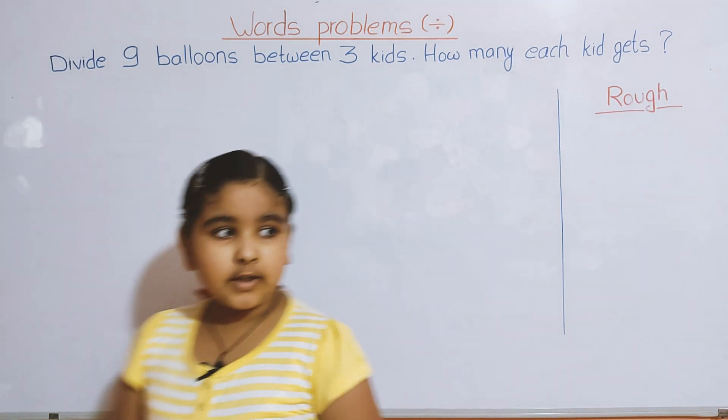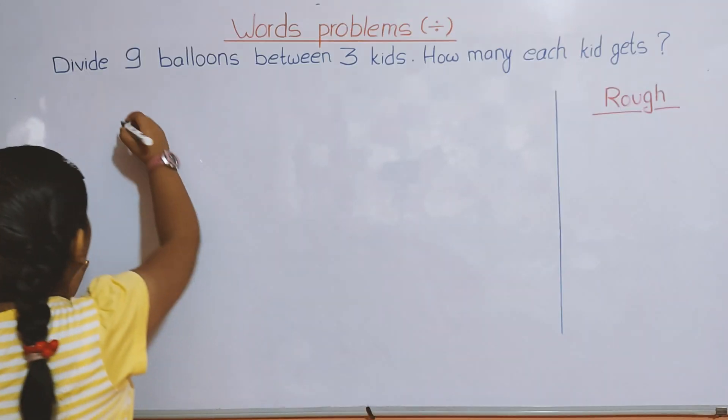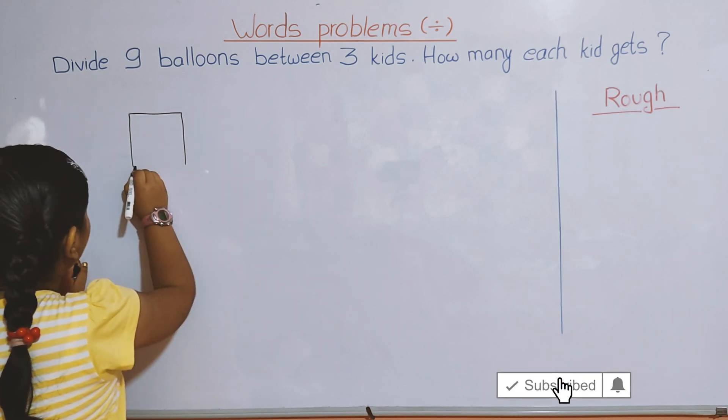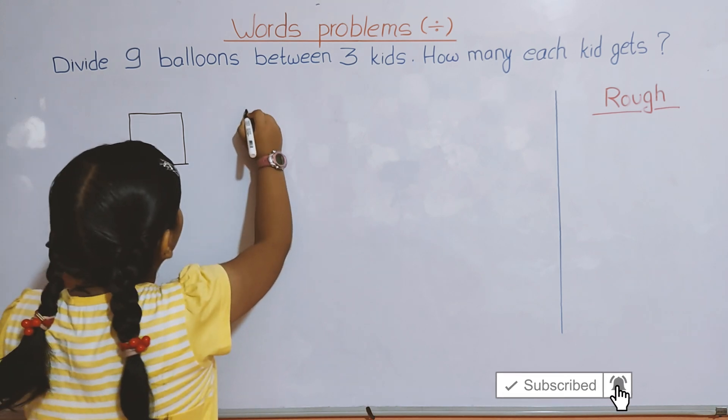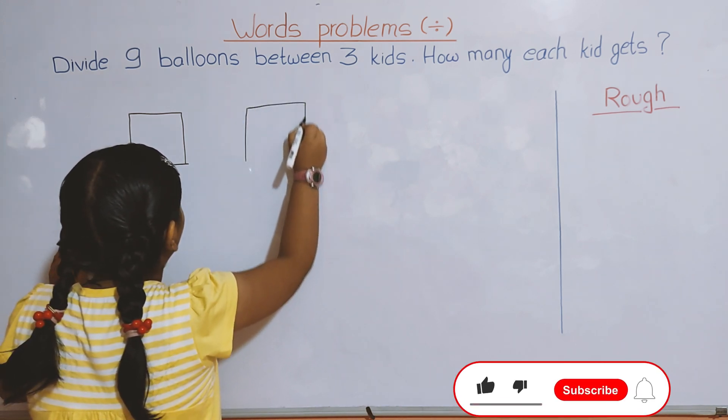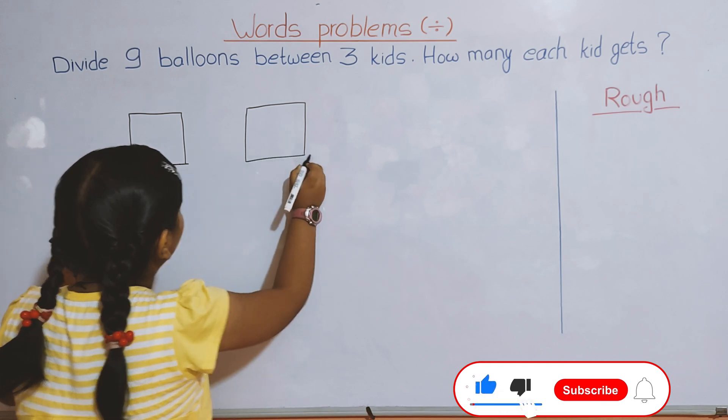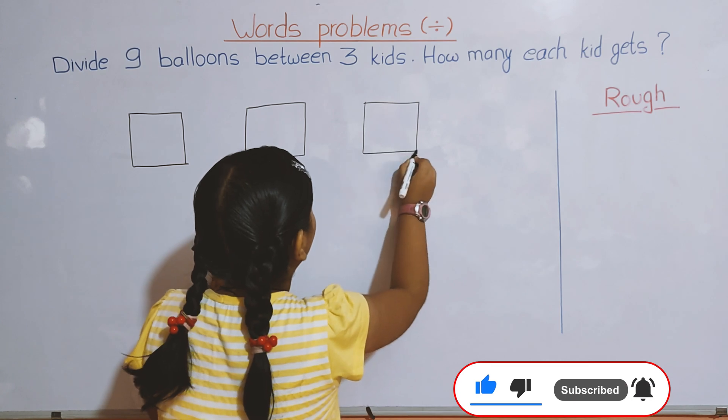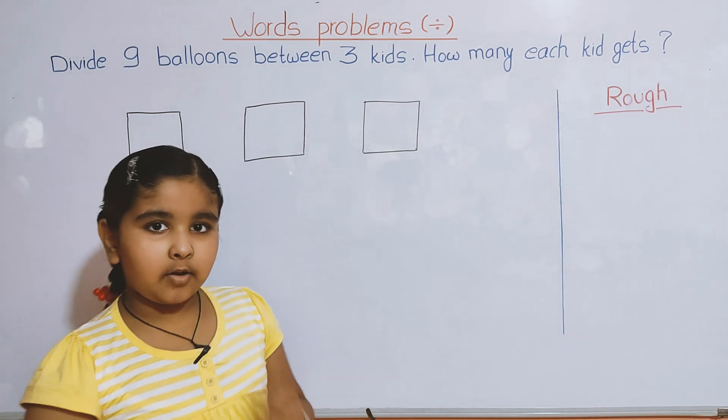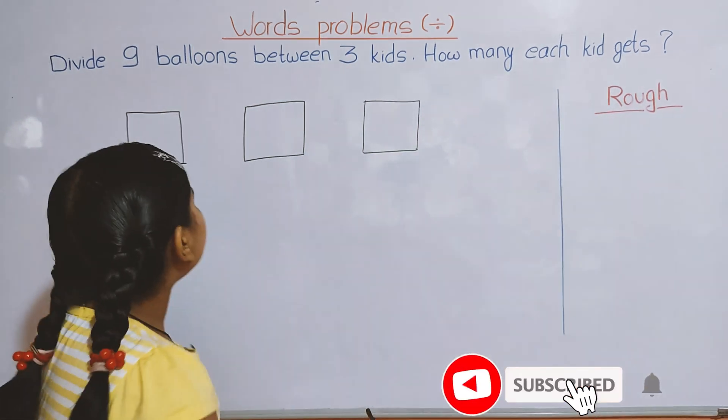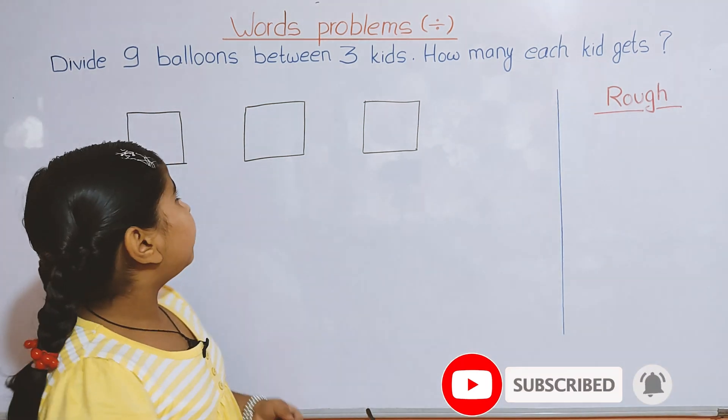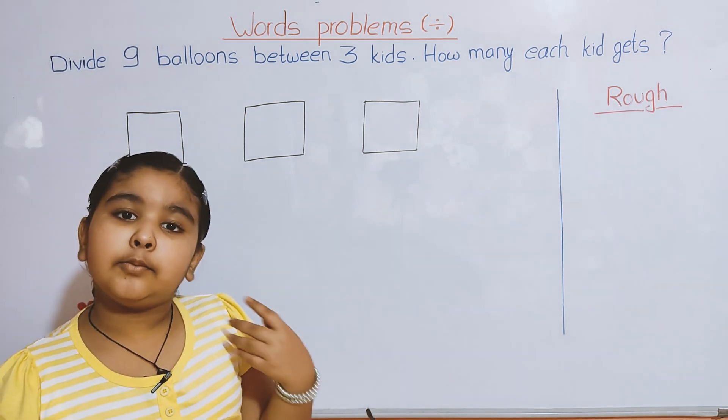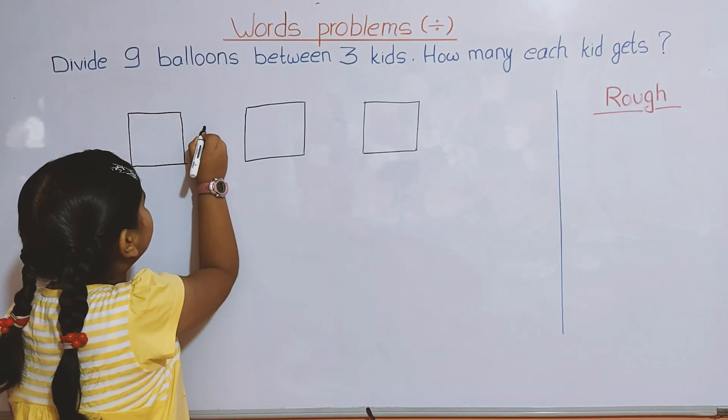Let's start. First, we have to make boxes - 3 boxes. Now, what sign do we have to put in the middle? We are doing word problems on division, so we have to put the division sign.